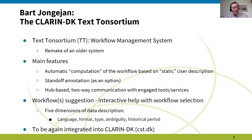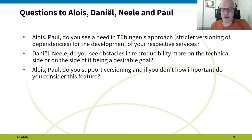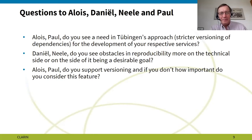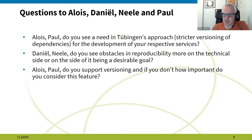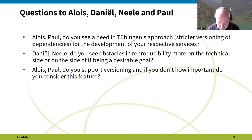That concludes the short introductions to all six papers. Martin now has some specific questions to the first three papers. We agreed on two minutes per answer. In my remarks I assumed that the approach presented by Daniel and Nele on reproducibility would be relevant also to Alois and Paul. I'd like to check that assumption: do you see a need for Tübingen's approach — stricter versioning of dependencies — for the development of your respective services, even if you might not want to use Docker or Nix?